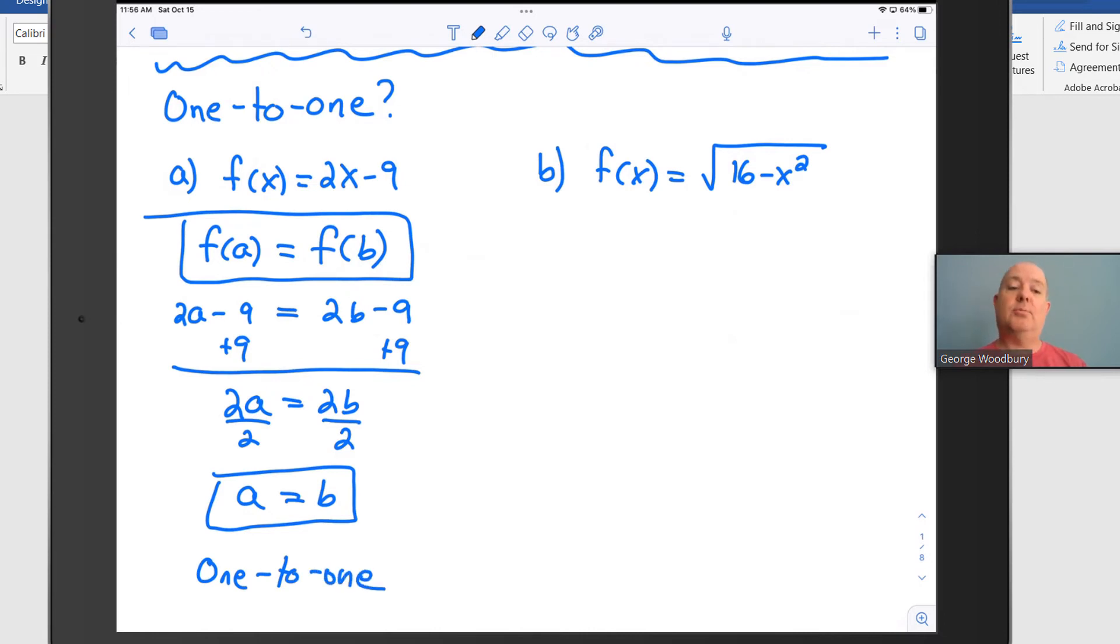Now, if we tried the same approach for the other one, it may not be easy to show that a might be different than b. This one is going to be not one-to-one. What we can do in this case is try a couple of values of x and see if we can produce the same output value. For example,